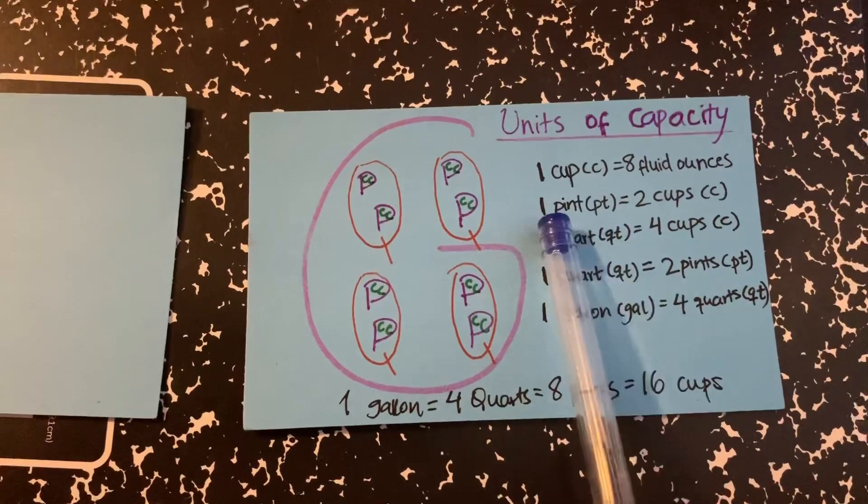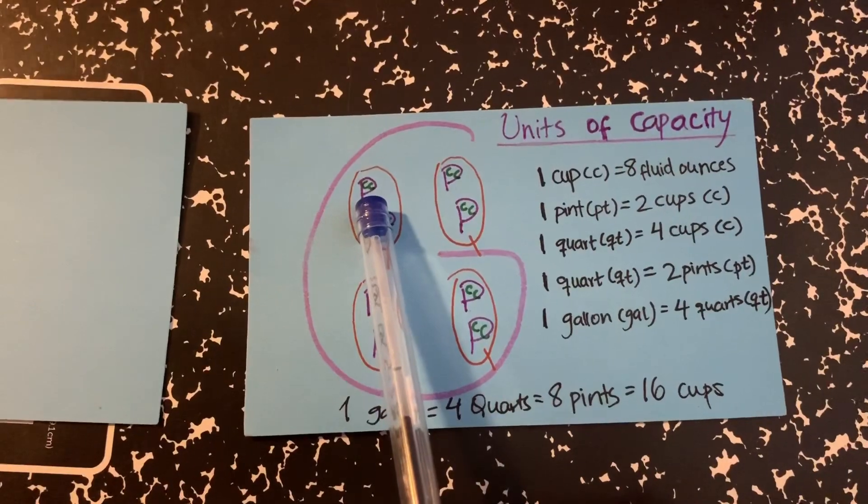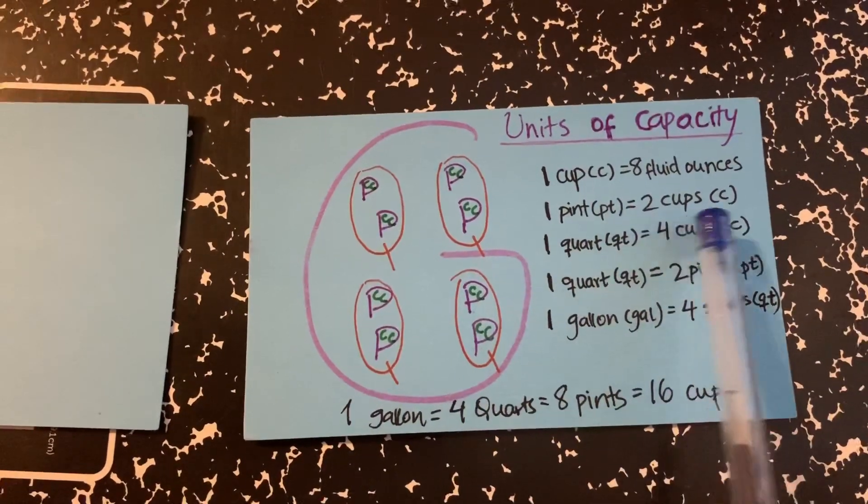1 pint. So pint is your B. So there's your B. And how many C does a B have? 2. So 1 pint is equal to 2 cups.